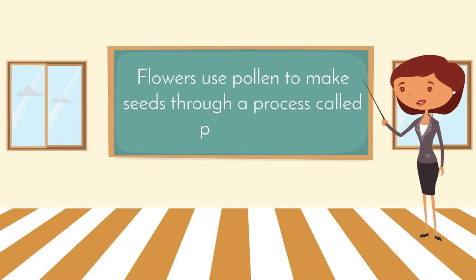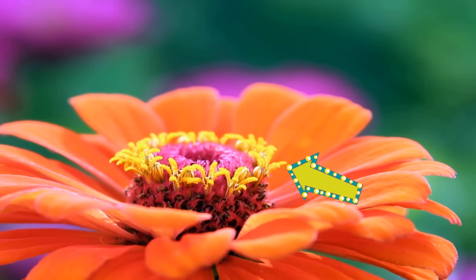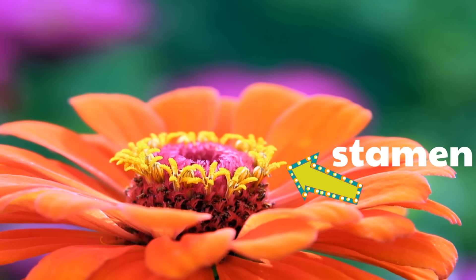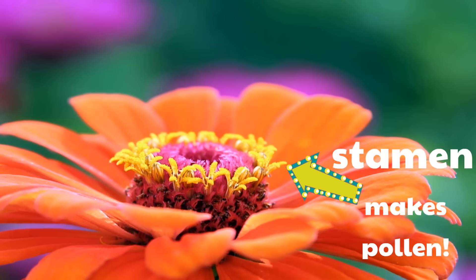Flowers use pollen to make seeds through a process called pollination. Do you see these yellow feathery parts of the flower? This is the male part of the flower called the stamen, and that is where the pollen is made.